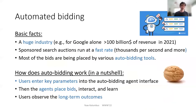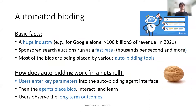This is a huge industry and these auctions run at an enormous rate. In fact, it's so fast that it's not practical or even possible to manually place a bid for each and every auction. So most of the bids are being placed by various auto-bidding tools. Users enter their key parameters into the auto-bidding agent interface, and then the agents automatically place bids, interact, and learn. The users can observe the long-term outcomes.